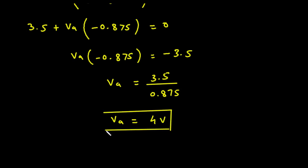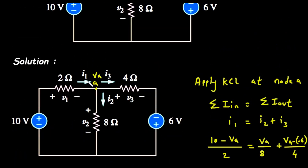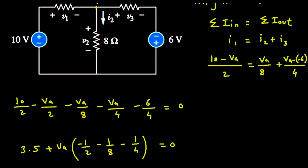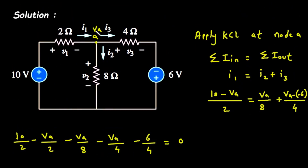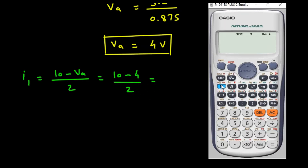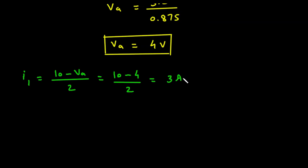Now since we found VA, we can find I1, I2 and I3. I1 = (10 − VA) / 2 = (10 − 4) / 2 = 6 / 2 = 3 amperes. So I1 equals 3 amperes.